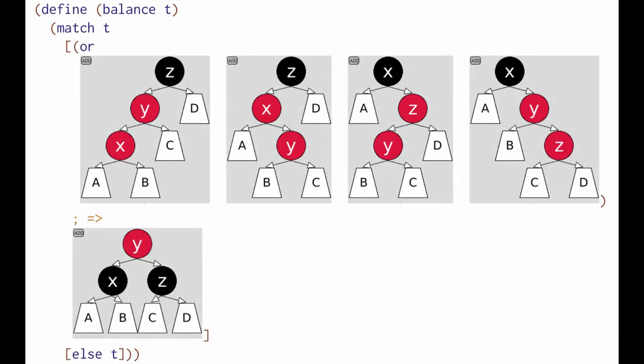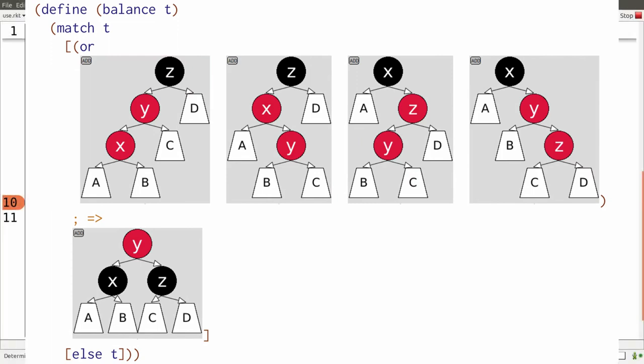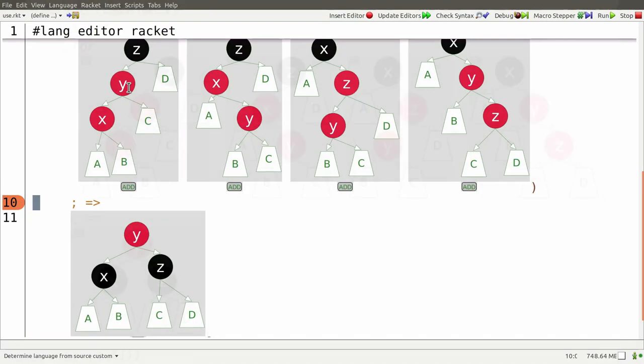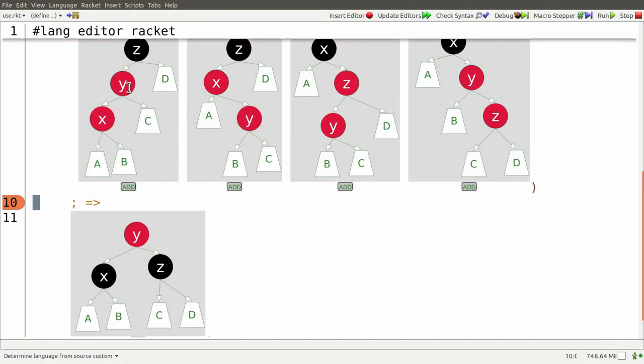A better approach would be to put the diagram right in the program, and have that diagram serve as both the pattern and the template. What you see here is actually runnable code. These first four trees at the top are patterns, while this last one at the bottom is the template.